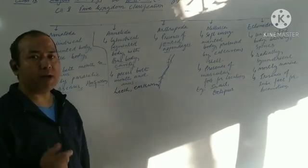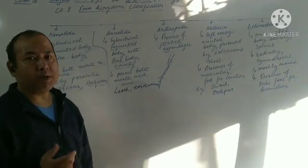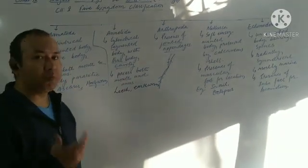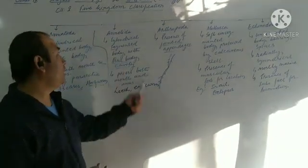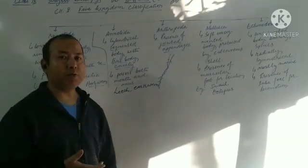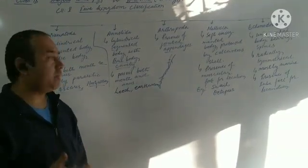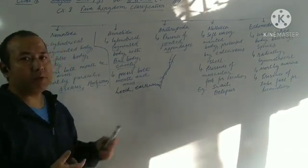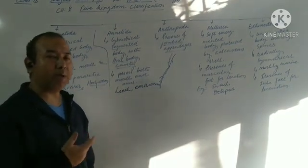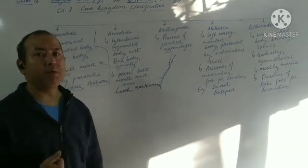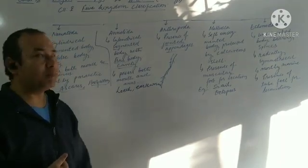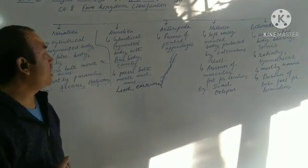In Nematoda, we do not find any false cavity. They have false cavity. Now here, they have true body cavity. They are coelomate. So that is why we generally are categorized under the group coelomate, bearing true body cavity. Then again, like Nematoda, it also bears both. Its alimentary canal bears both mouth and anus. So two characteristics I have mentioned, I have included here.